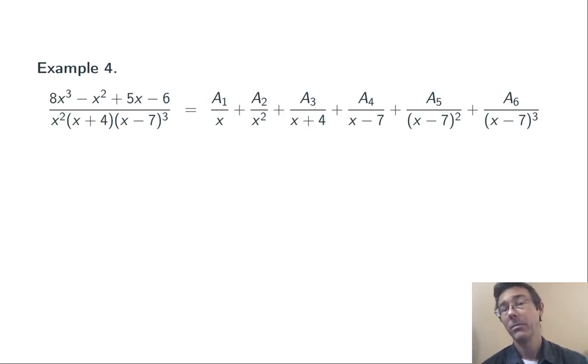And then I have (x - 7)³, so I need three terms for that. Constant over (x - 7), another constant over (x - 7)², and another constant over (x - 7)³.